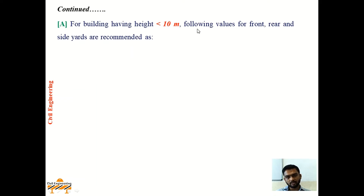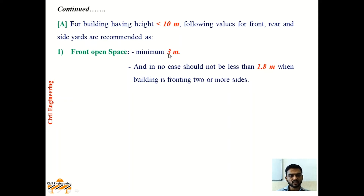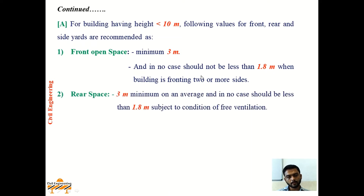For buildings having height less than 10 meters, the following rules for front, rear, and side yards are recommended. Front space minimum provided should be 3 meters, and in no case should it be less than 1.8 meters when the building is fronting 2 or more sides — that is, when the building is at a corner or 2 roads are approaching the plot. Rear space should be 3 meters minimum on average, and in no case less than 1.8 meters, subject to the condition of free ventilation and free circulation of emergency services.